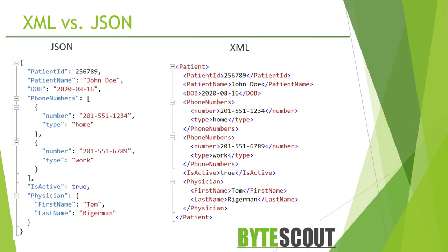JSON and XML both have well-documented open standards on the web and both are human and machine-readable. Just a few years ago, XML was the only choice for open data interchange. But developments in open data sharing have introduced more options for developers, each with their own set of benefits.